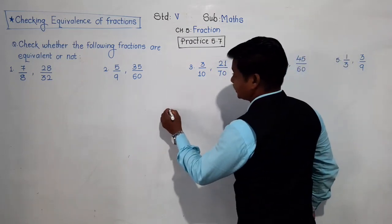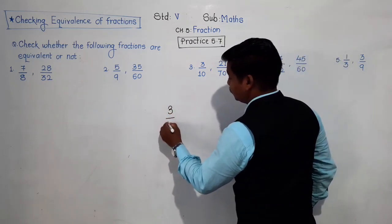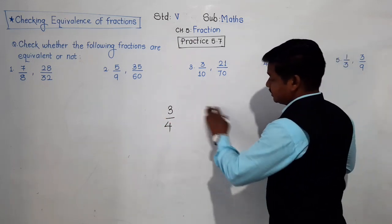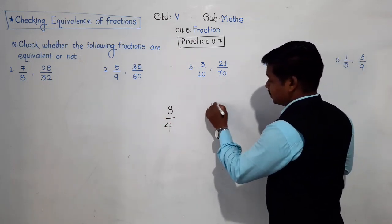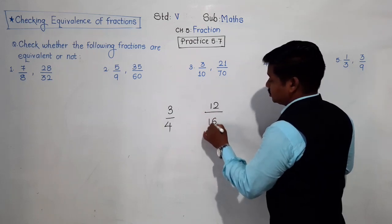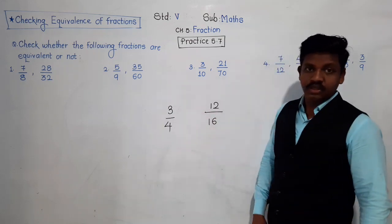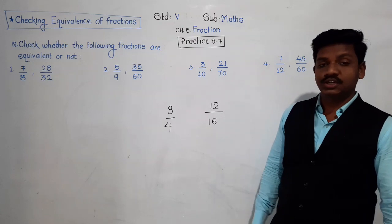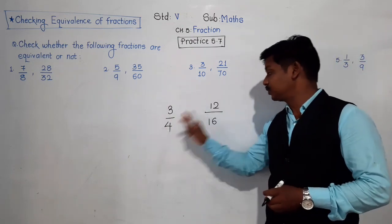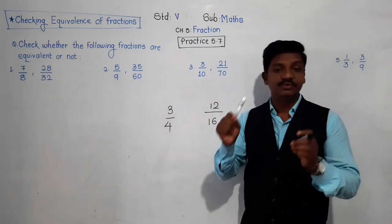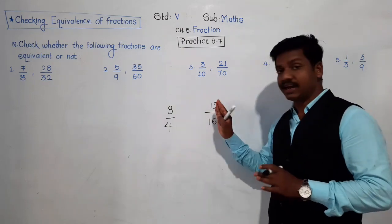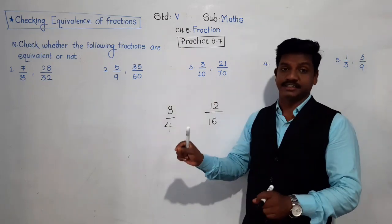For example, suppose there is 3 upon 4 and another fraction is 12 upon 16. The question is: check whether 3 upon 4 and 12 upon 16 are equivalent or not. That is what we have to check.